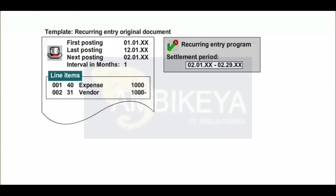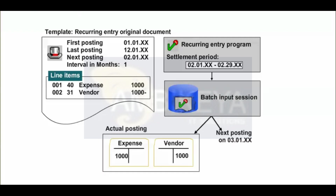The program selects all recurring entry original documents in which the date of the next posting falls within the specified period and then generates a batch input session. When the batch input session is run, an accounting document that corresponds to the original document is posted and the date of the next posting is updated in the original recurring entry document.